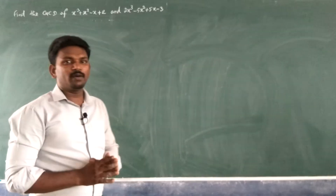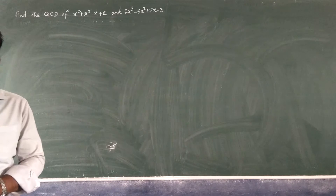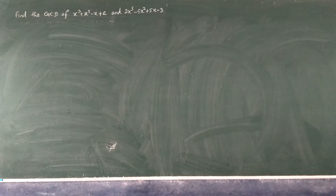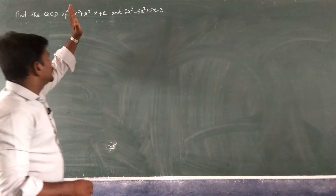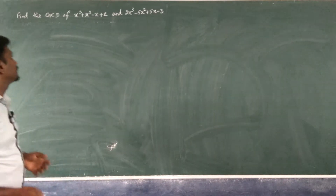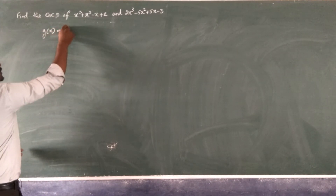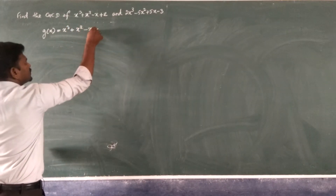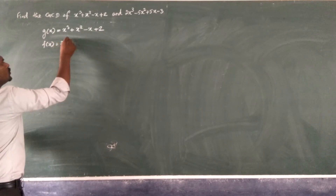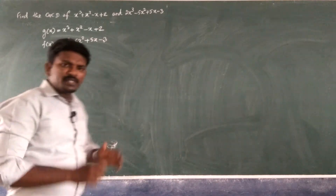Hello students. In this video we are going to see how to find the GCD — Greatest Common Divisor — of two polynomials. There are many methods, but we are going to use a very simple method you can understand easily. Two polynomials are given: g(x) = x³ + x² - x + 2 and f(x) = 2x³ - 5x² + 5x - 3.